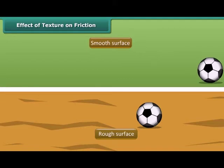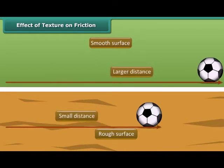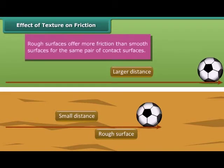The ball rolling on the smooth surface travels a larger distance than the ball rolling on the rough surface. This shows that rough surfaces offer more friction than smooth surfaces for the same pair of contact surfaces. This example proves that friction depends on the texture of contact surfaces.